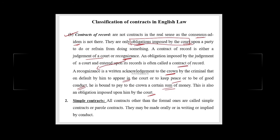The second type of classification is simple contracts. All contracts which do not fall under formal contracts are called simple contracts, also known as parol contracts. They may be made orally, in writing, or implied by the conduct of the parties. Express contracts can be in writing or oral. Implied contracts are those implied by the way in which the parties behave — they may not express it in writing or orally, but such contracts are implied by the conduct or behavior of the parties.